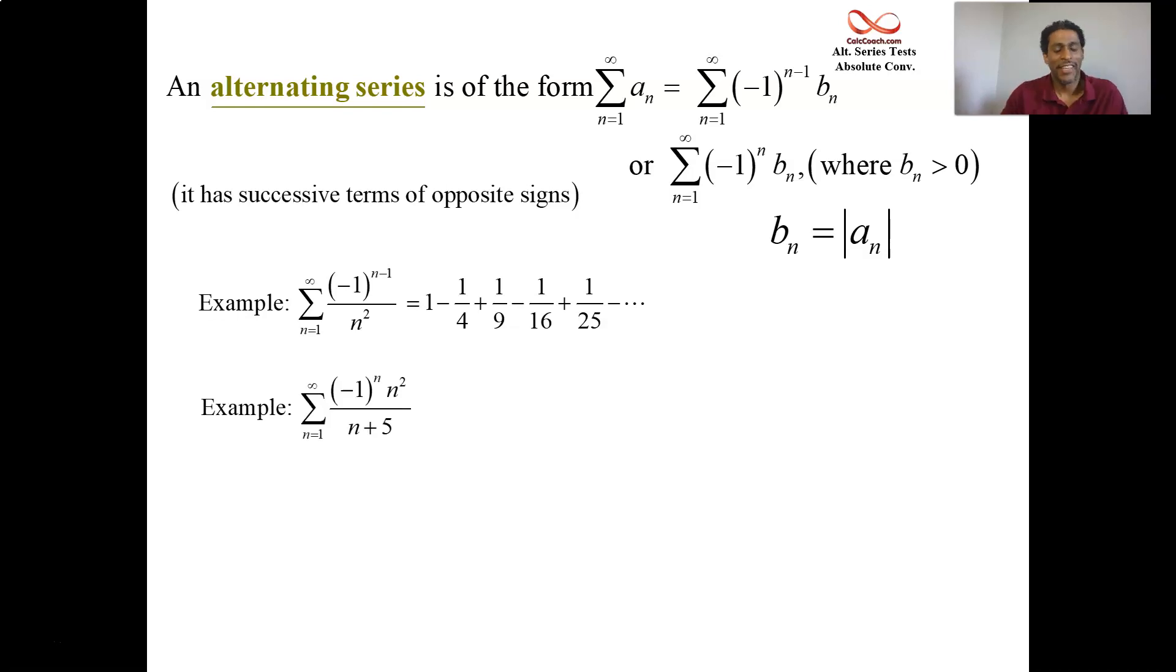Next example: alternating sign, a little different. Maybe instead of (-1)^(n-1), it's just (-1)^n. That's fine. And then there's the rest of it: n squared over n plus 5. You plug in 1, you get a sixth, but it's negative one-sixth. You plug in 2, you get 4 over 7, but it's positive. It's going to go back and forth in this manner. This is also an alternating series.